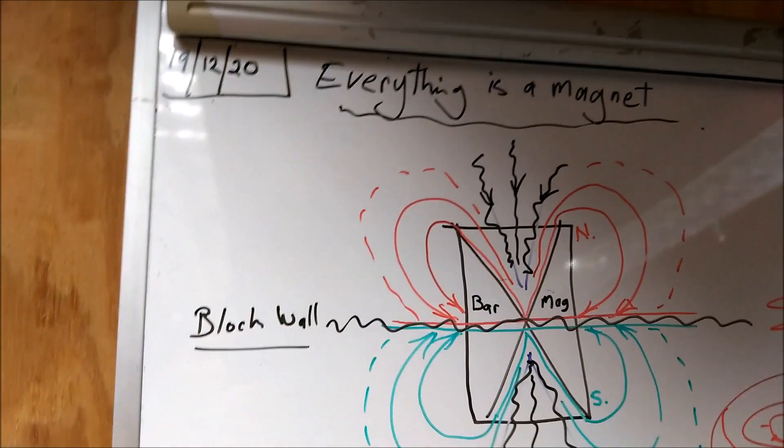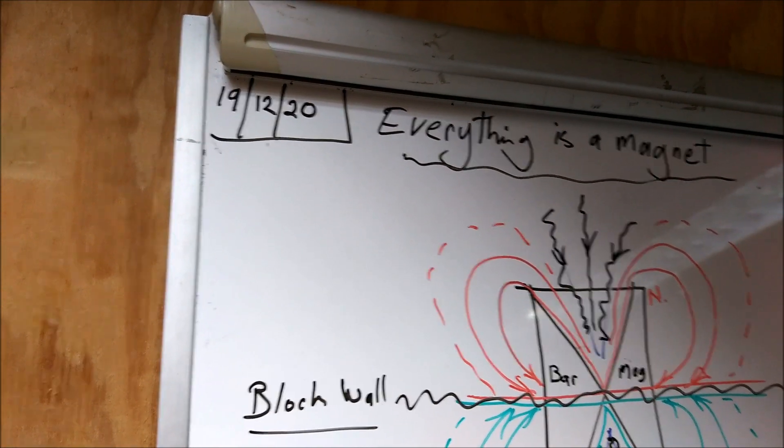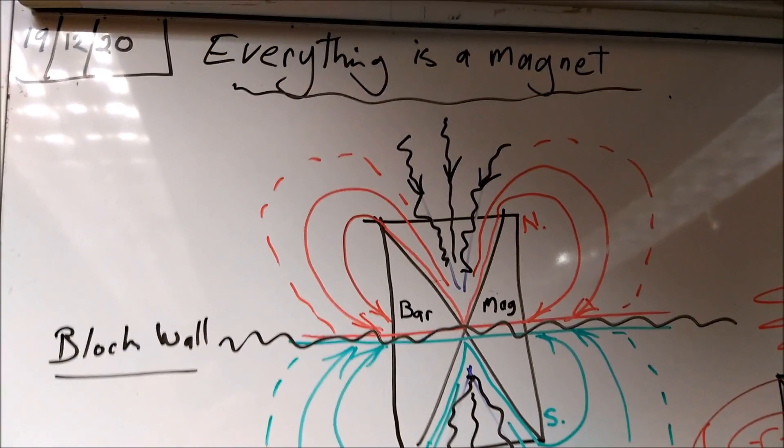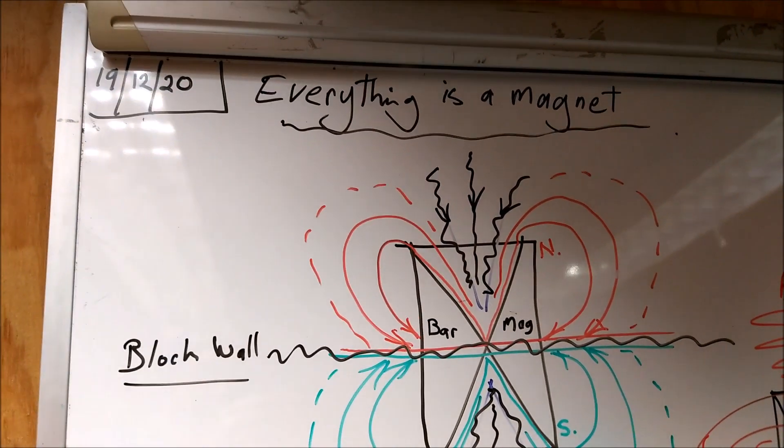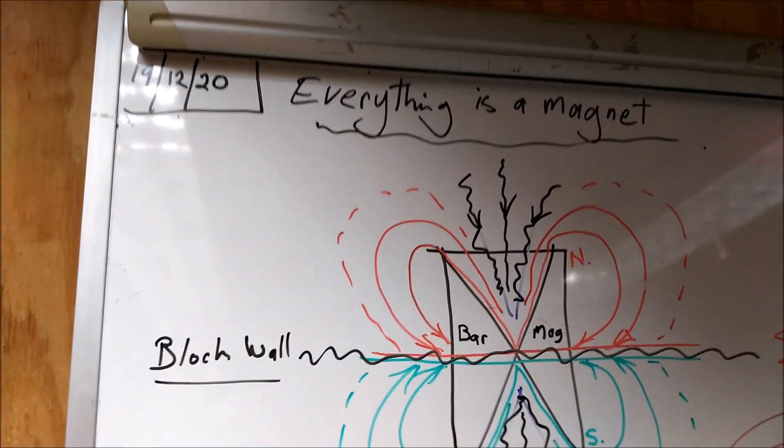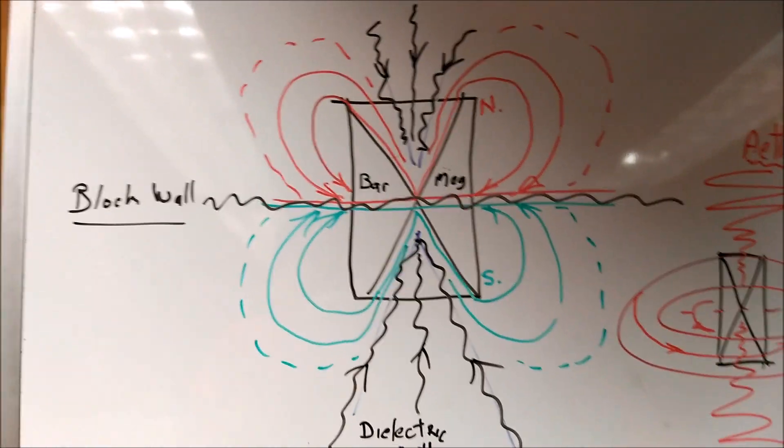Hi everybody, it's DC here. It's the 19th of December 2020, and under the heading everything is a magnet. Tesla said everything's light, but I'm saying everything's a magnet. So what we've got here on the whiteboard schematics...